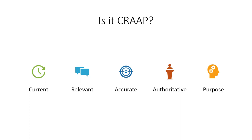Is the source current? How timely is the information? Do you need historical research or more current research? For example, if you're doing scientific research, you will want the most recent and up-to-date information. If you're looking at the trends of vampire through literary history, you'll want a mix of historical and more current information. Is it relevant? Just because it was in your search results doesn't mean it's relevant to your assignment. It's also important to look at the intended audience. You don't want to use an article written for elementary school students in your college paper.